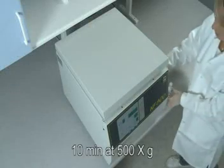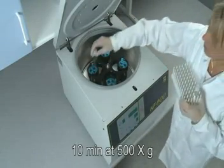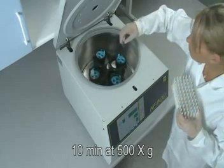Centrifuge for 10 minutes at 500 times G. Calculate the correct RPM for 500 times G for your centrifuge.